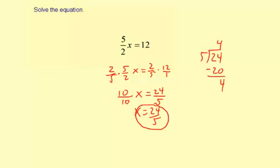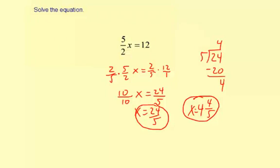Subtract, and you get 4. So you have 4 and 4 fifths as your other answer. So these are equivalent answers, just written two different ways.